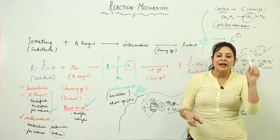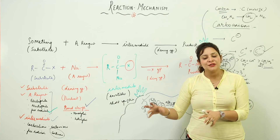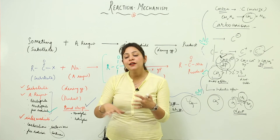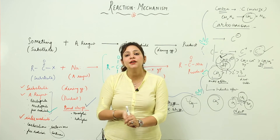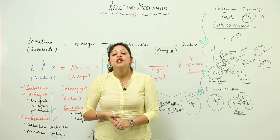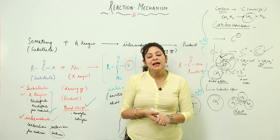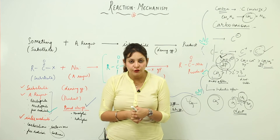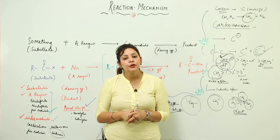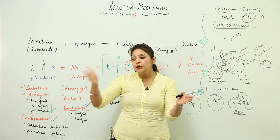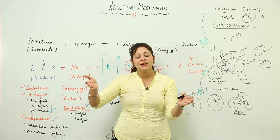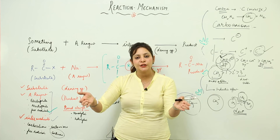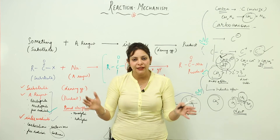Now, one more thing I would like to discuss: like we have carbocations (carbon with positive charge) and carbanions (carbon with negative charge), what kind of reactions do you think they can undergo? If we talk of the carbocations, because they have the positive charge, they can be attacked by nucleophiles. Nucleophiles are in search of positive charge, and the positive species is looking for electrons — so they can combine.